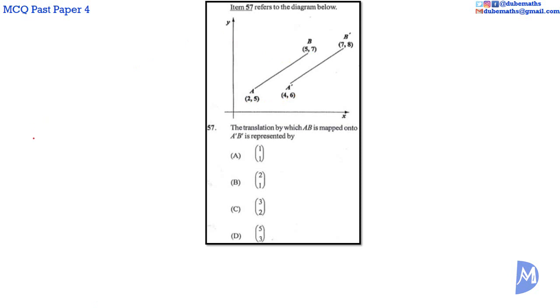Thus, a general point (X, Y) is mapped onto (X plus 2, Y plus 1). The column vector representation is thus (2, 1). The answer is B.